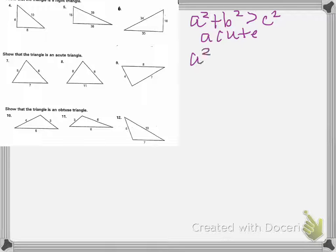We have A squared plus B squared is equal to C squared, then it is a right triangle.